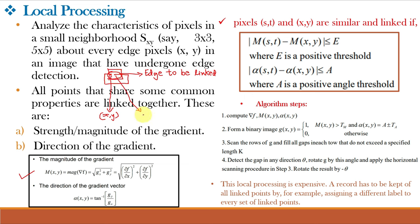Say pixel (x, y) and pixel (s, t): these pixels are similar and linked if two conditions are satisfied. First, the magnitude of gradient at (s, t) minus magnitude of gradient at (x, y) should be less than or equal to some positive threshold. Second, the direction angle difference should be less than or equal to some positive angle threshold. If both conditions are satisfied, pixel (s, t) and pixel (x, y) will be linked, otherwise they will not be linked. The disadvantage of local processing is that it is computationally expensive because a record must be kept of all linked points, assigning a different label to every set of links.